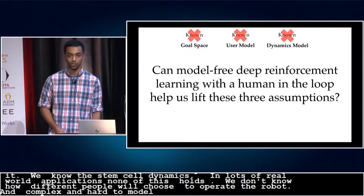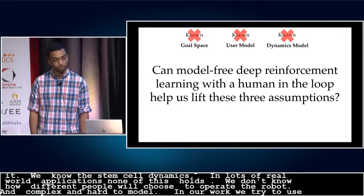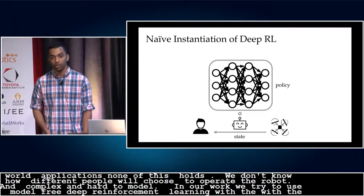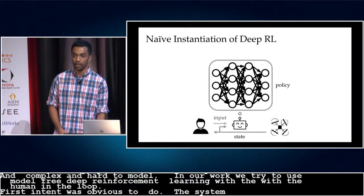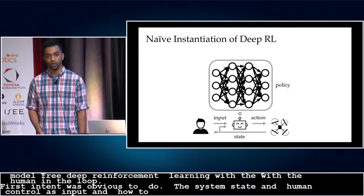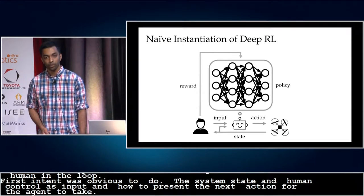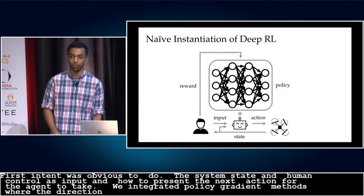In our work, we try to lift these three assumptions using model-free deep reinforcement learning with the human in the loop. Our first attempt was the sort of obvious thing to do. We fed a neural network the system state and human control as input and had it predict the next action for the agent to take. We trained it using standard policy gradient methods where the reward signal came directly from the user.